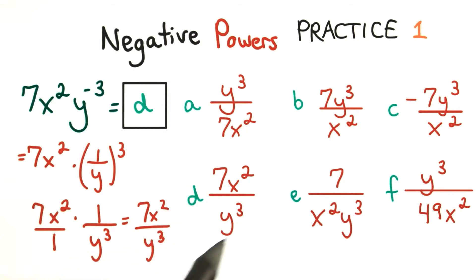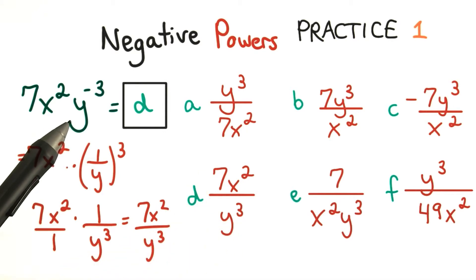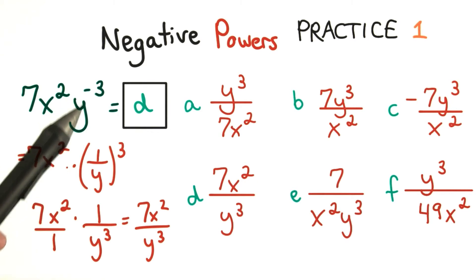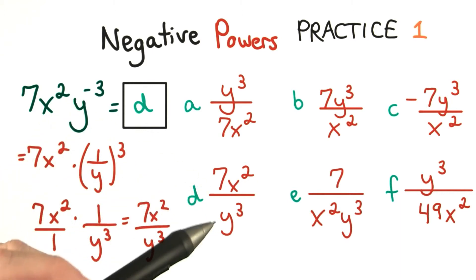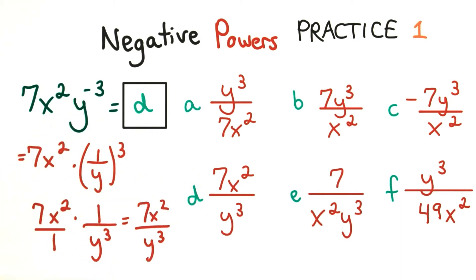This choice. To get to the answer more quickly, think about what a negative exponent does. It moves the base from the numerator to the denominator, just like in d.